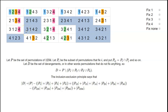A derangement is just a permutation that doesn't send any number to itself. The ones with a grey background are the derangements — for example, 1 goes to 3, 2 goes to 1, 3 goes to 4, 4 goes to 2, all different. So how many derangements of 1, 2, 3, 4 are there? We can just count them: there are 9 derangements. But if we wanted derangements of 1 to 10, the total number of permutations is 10 factorial, which is very large, so we want a formula for it.